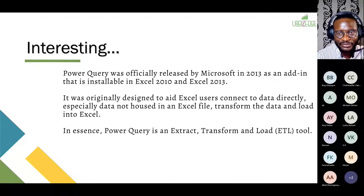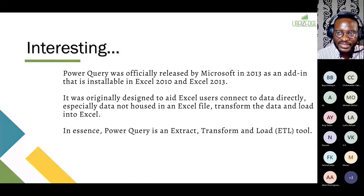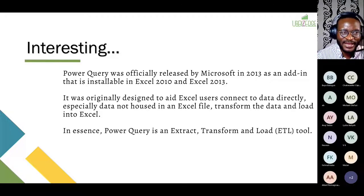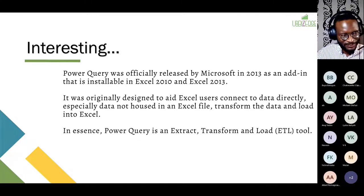In Excel 2013 it was an add-in, then in Excel 2016 they put it there as 'Get and Transform Data' as a built-in tool. It was originally designed to aid Excel users to connect to data directly — especially data not housed in any Excel file, like databases or PDFs — then transform the data, load it into Excel, and do your usual charts and pivot tables. That's the Extract, Transform, and Load — ETL — process we now do in Excel thanks to Power Query.